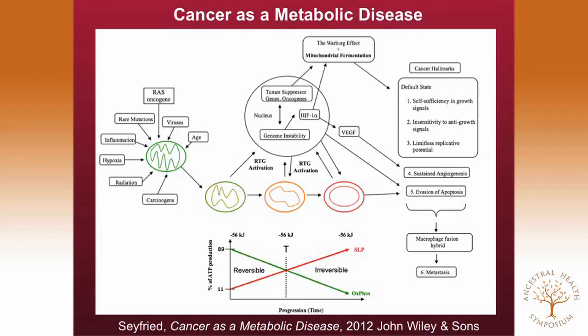Cancer is a metabolic mitochondrial disease caused by multiple environmental factors damaging respiration. This leads to a retrograde signaling system — the mitochondria signal to the nucleus that there's not enough energy. The nucleus then turns on oncogenes, which are compensatory transcription factors that drive glucose and glutamine fermentation. If cells continue to ferment, the nucleus becomes unstable, producing genomic instability as a secondary downstream epiphenomenon. Oxidative phosphorylation is gradually replaced by substrate-level phosphorylation. You can get the entire spectrum of Hanahan-Weinberg cancer characteristics following this framework.